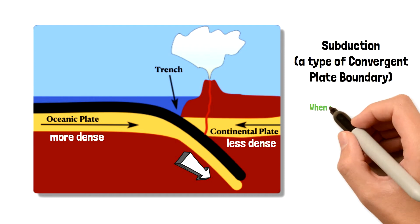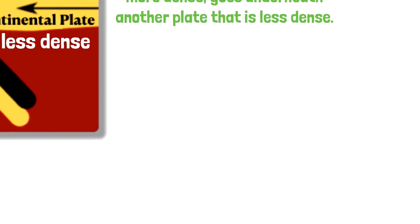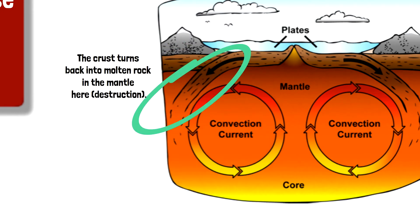Subduction occurs when one plate goes underneath another plate. As the plate that is being subducted goes further into the earth, it begins to heat up and eventually melts. It turns back into molten rock and becomes part of the mantle again. This is why convergent plate boundaries, mainly at areas of subduction, is known as an area of destruction, because crust is being destroyed as it re-enters the mantle.